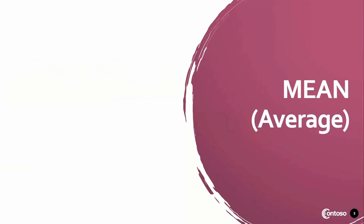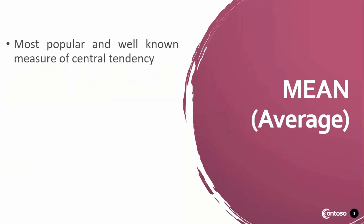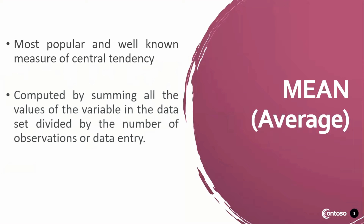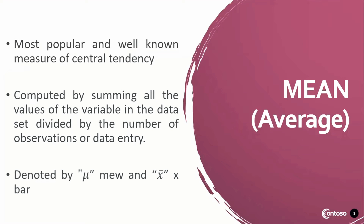Mean, or average, is the most popular and well-known measure of central tendency. It is computed by summing all the values of the variable in the data set divided by the number of observations or data entry. It is denoted by mu and x bar.